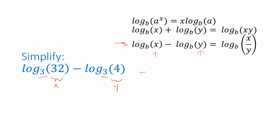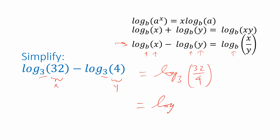According to this property, this is going to be the same as logarithm base 3 — the same base as on the other side of the identity — of the fraction x over y, which in this case is 32 over 4. We can simplify that a little bit more because 32 divided by 4 is 8. So our final answer for this problem is log base 3 of 8.